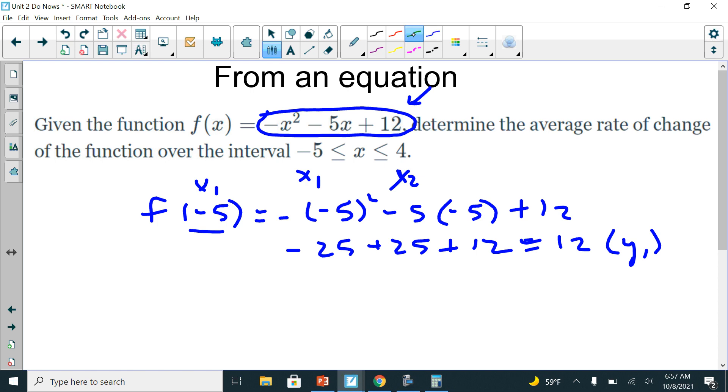So I'm going to do the same thing for my x2 now. So let me switch colors a little bit. So here's my x2. So I'm going to take a 4 and plug it in. So f of 4 is equal to, and again I'm going to plug it into this function. So I have negative 4 squared minus 5 times 4 plus 12.